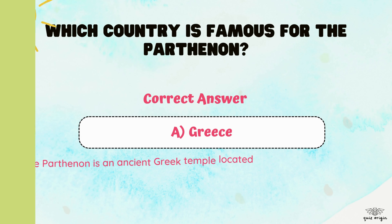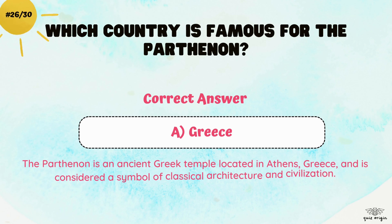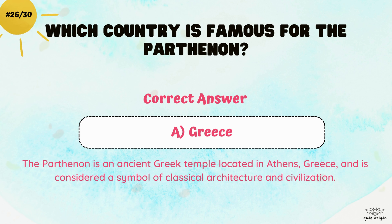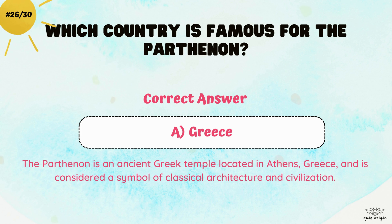The correct answer is A. Greece. The Parthenon is an ancient Greek temple located in Athens, Greece, and is considered a symbol of classical architecture and civilization.